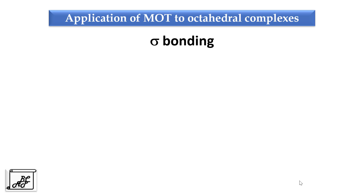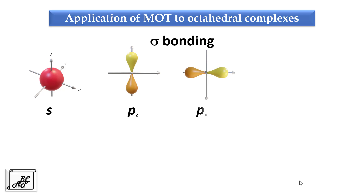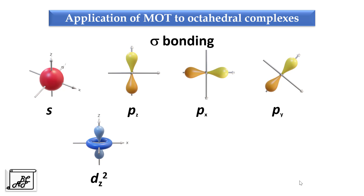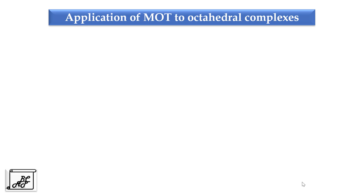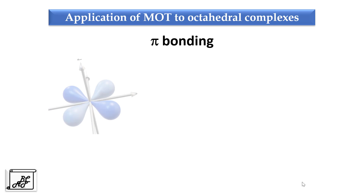Let's move to the application of molecular orbital theory to octahedral complexes, in which we will study first sigma bonding molecular orbitals and then pi bonding molecular orbitals, probably in the next video. We will first see the types of atomic orbitals that can participate in sigma bonding: the s orbital, Pz, Px, Py atomic orbitals, then dz² and dx²-y² atomic orbitals. The remaining three d orbitals of the central metal atom — dxy, dyz, and dxz — can participate in pi bonding.